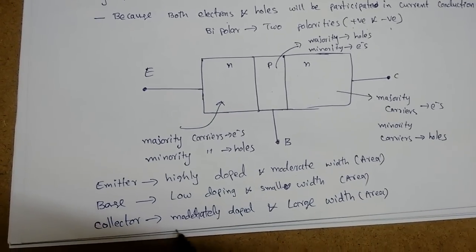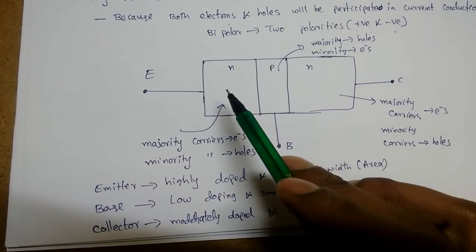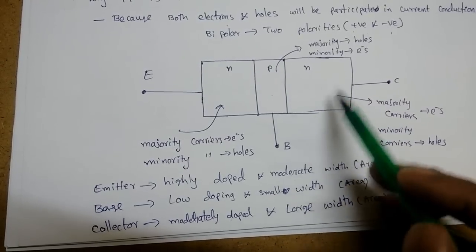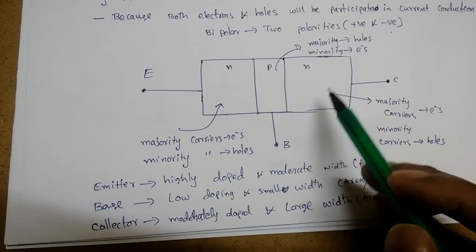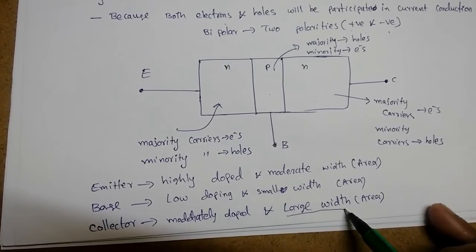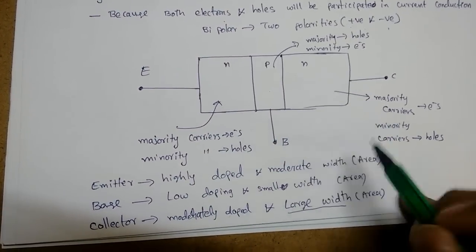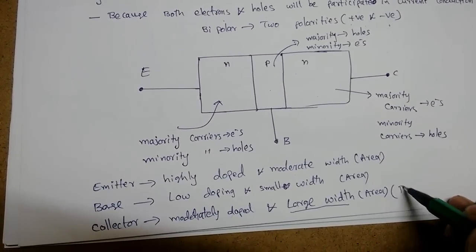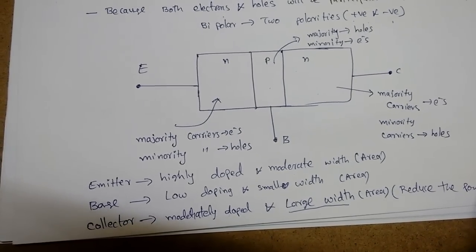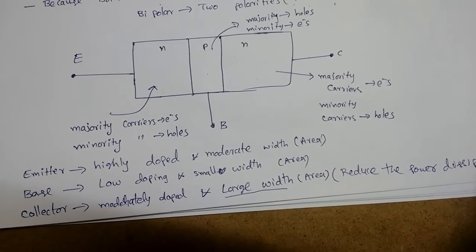The collector should be moderately doped because it simply collects the electrons coming from the emitter — it does not require heavy or light doping, just moderate. The collector should also have a large width: one reason is to collect the large number of electrons arriving, and another is to reduce power dissipation.